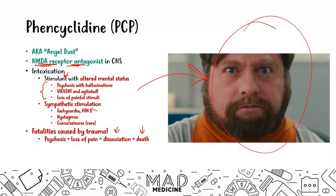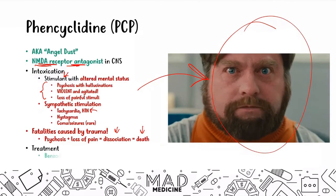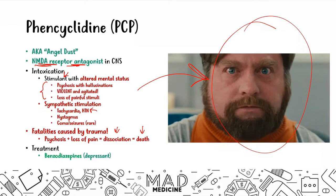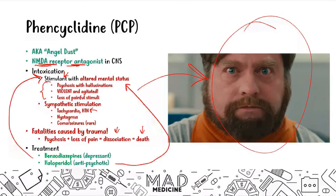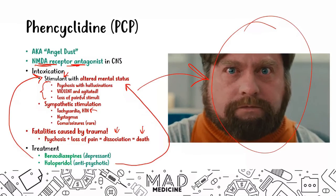Treatment for PCP intoxication involves a two-pronged approach. First, benzodiazepines — a depressant — to deal with the stimulant capabilities and reduce stimulation. Second, haloperidol — an antipsychotic — to address the altered mental status. Using these two drugs together, you can wean someone off PCP, assuming they haven't harmed themselves or someone else during intoxication.